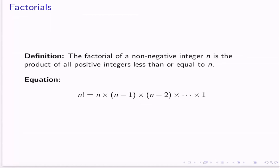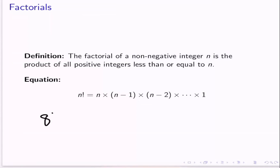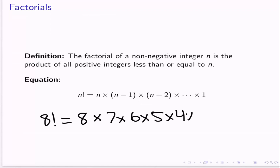An example: let's say we wanted to find out what 8 factorial was. Well, 8 factorial is going to be equal to 8 times 7 times 6 times 5 times 4 times 3 times 2 times 1. And then once we get to times 1, we can stop.